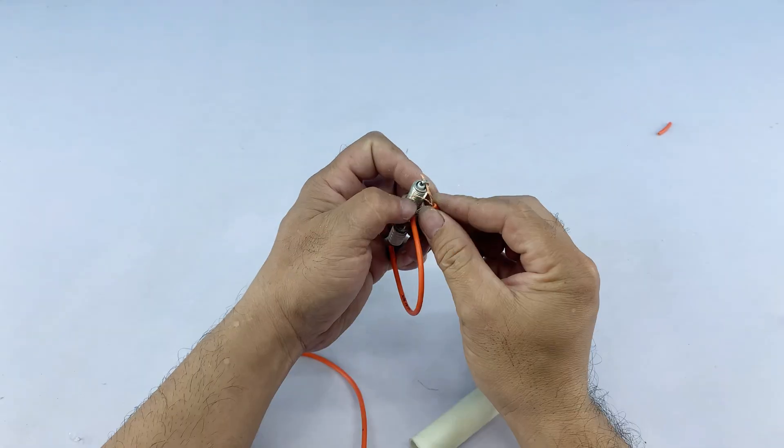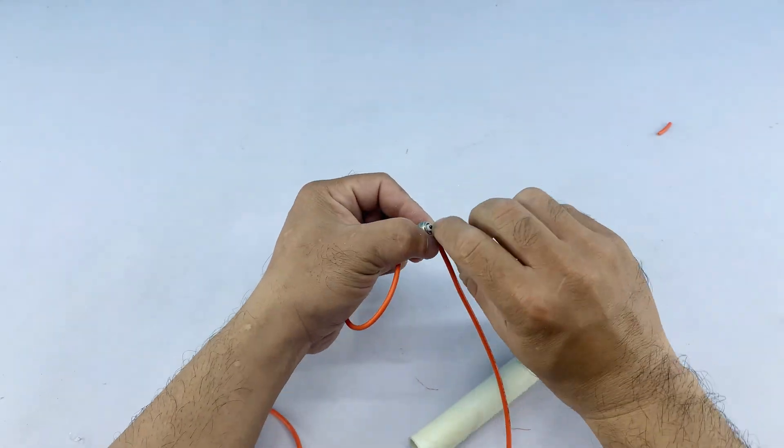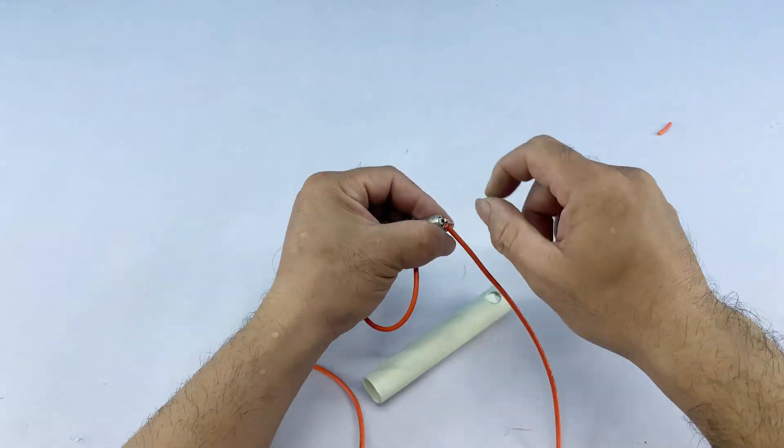I removed the spark plug from the PVC pipe and connected the wire to the spark plug end. This completes the circuit for the heating element.